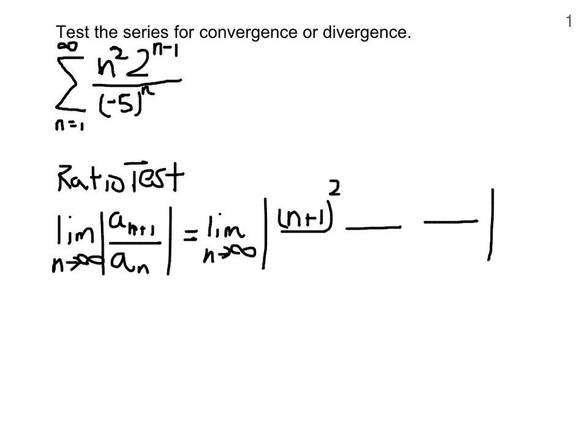So n plus 1 squared, 2, now be careful here, it's already n minus 1, so n plus 1 minus 1, and in the denominator we have negative 5 raised to the n plus 1.